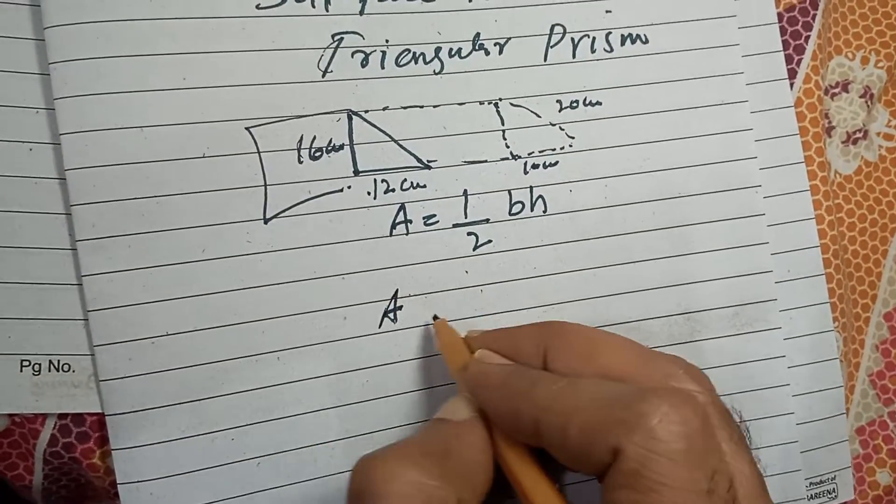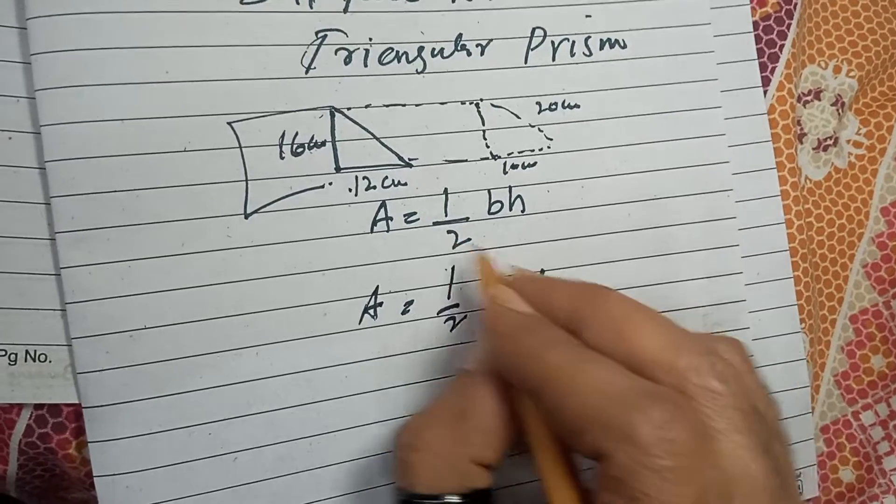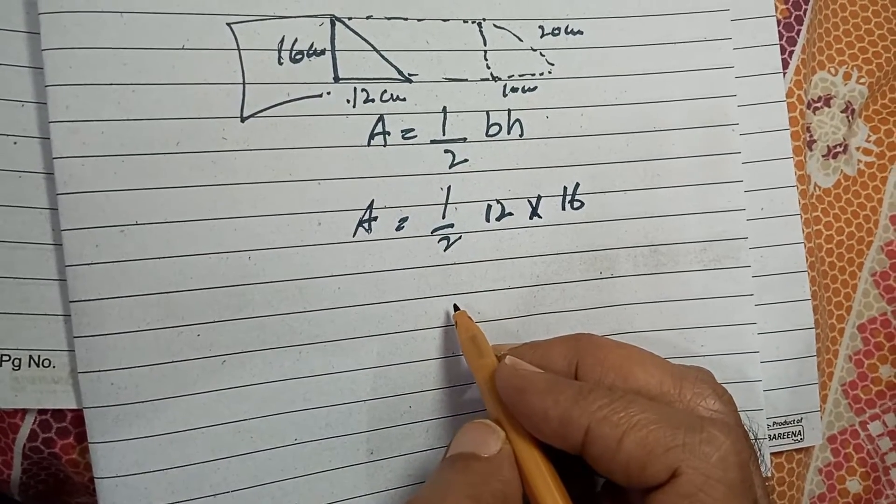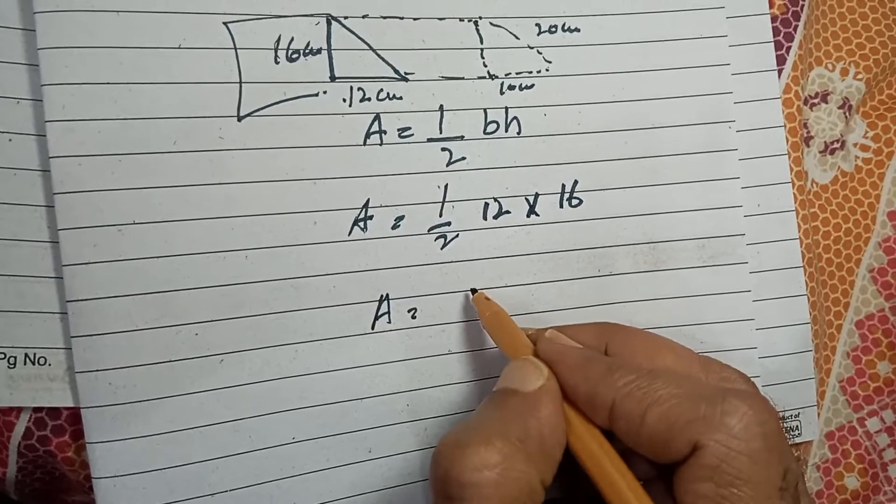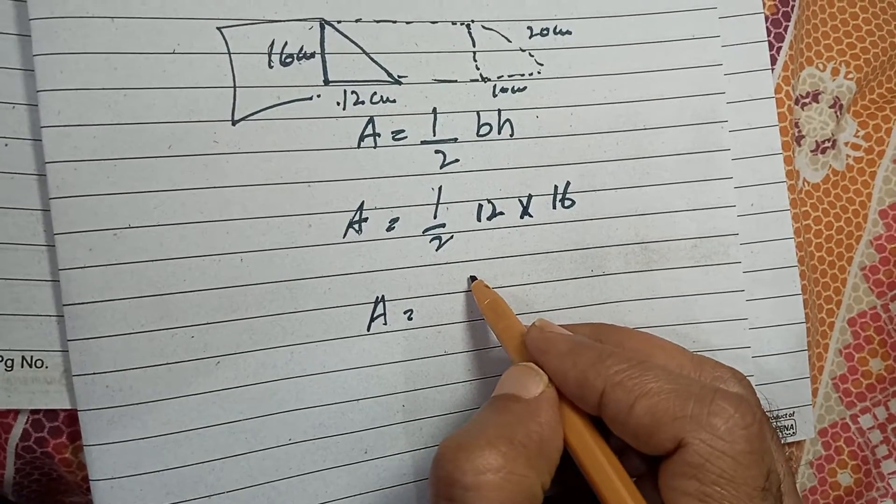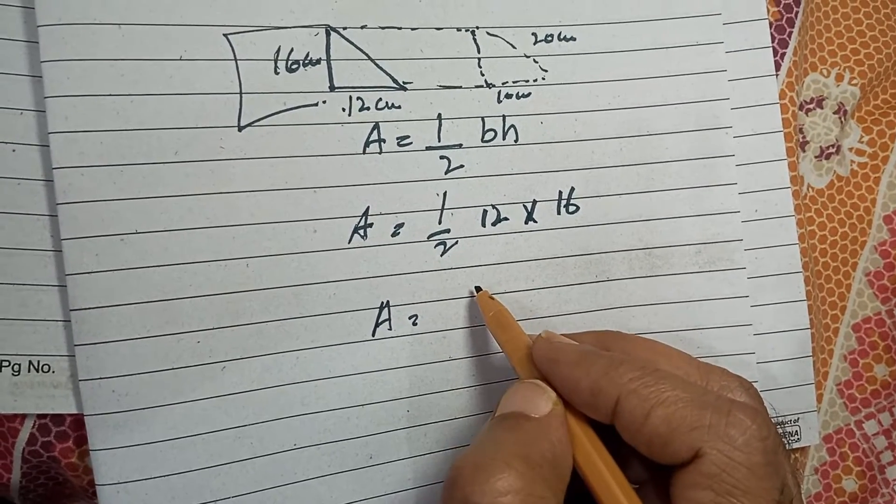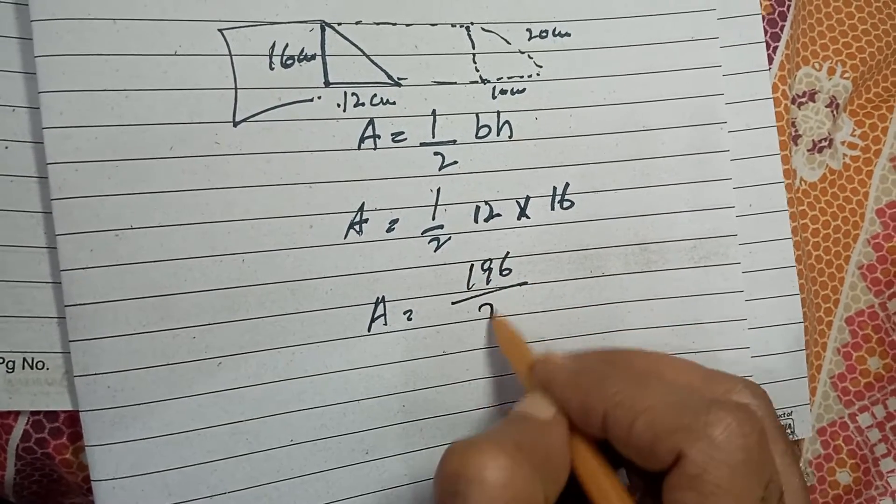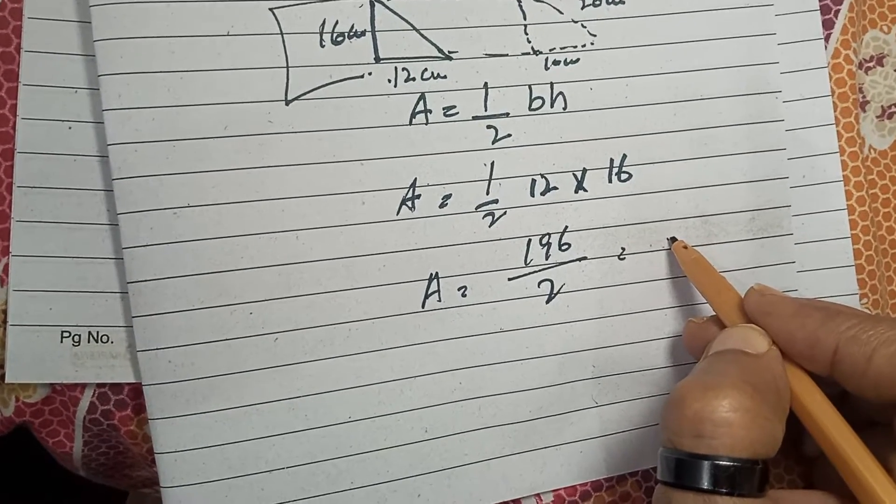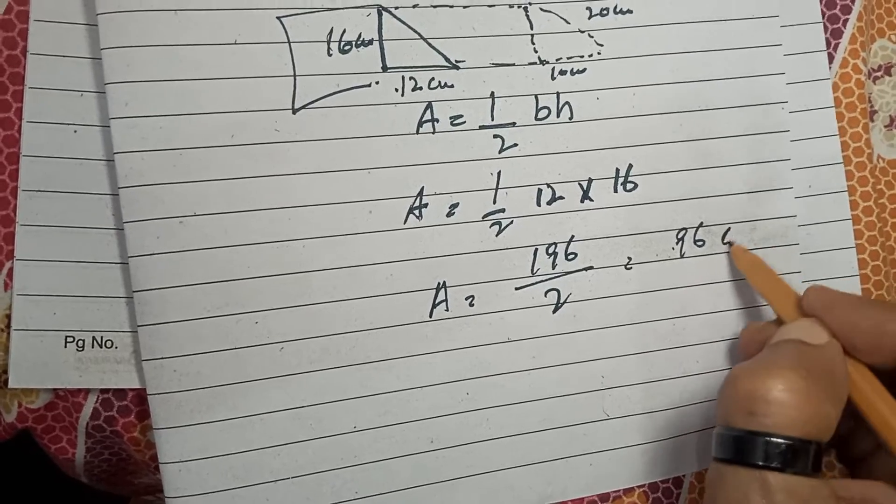So this area: 1/2, the base is 12, height is 16. And 96, it's 196. I do that will be 96. If you have a calculator you can use this, you can use the calculator if the value is large, so you just calculate the value.